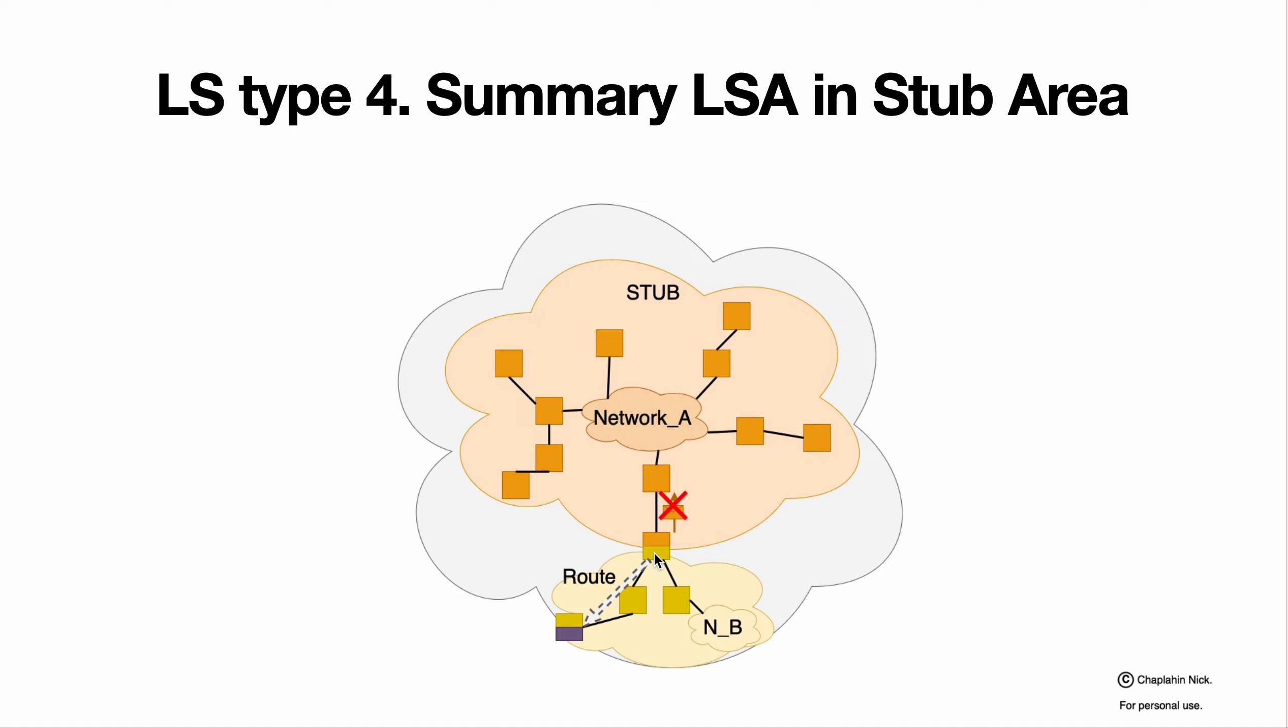Border router of the STUB network will not generate LSAs type 4, because it is default route for all external traffic and those devices should not take care about autonomous system at all.